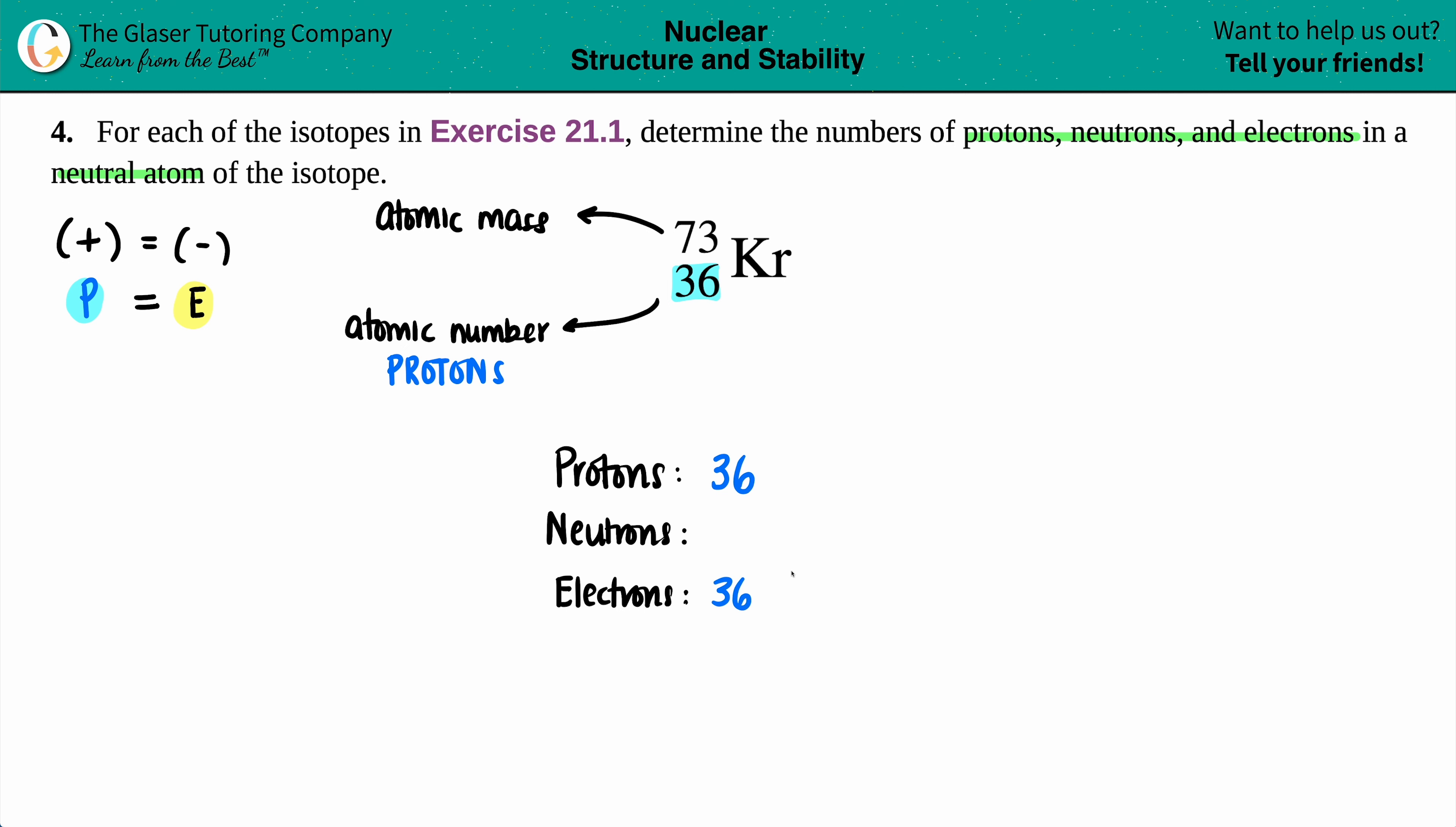Now we have two-thirds of the answer; we just need to find out the neutrons. Well, that has to do with something with the atomic mass, and you're absolutely correct. The atomic mass is the mass of the nucleus. The bulk of the mass of any element is in its nucleus, so there are two particles in the nucleus: it's your protons, and then you have your neutrons.